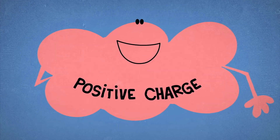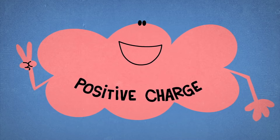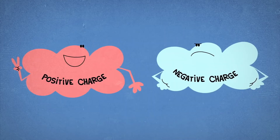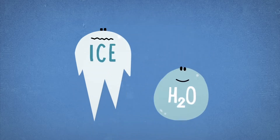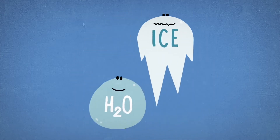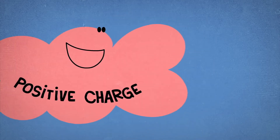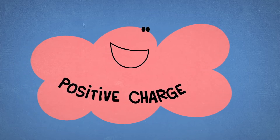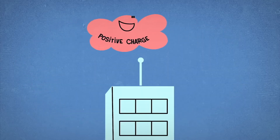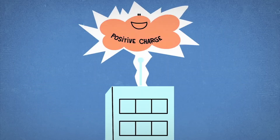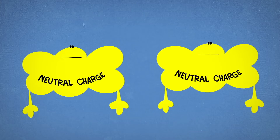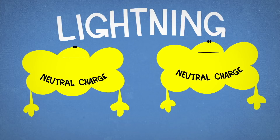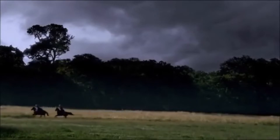In certain conditions, charge separation will occur in clouds. We don't know exactly how this happens — it may have to do with the circulation of water droplets and ice particles within them. Regardless, the charge imbalance is neutralized by being released towards another body, such as a building, the earth, or another cloud, in a giant spark that we know as lightning.